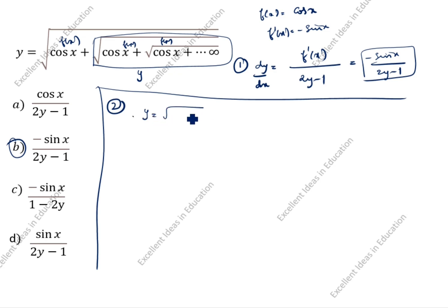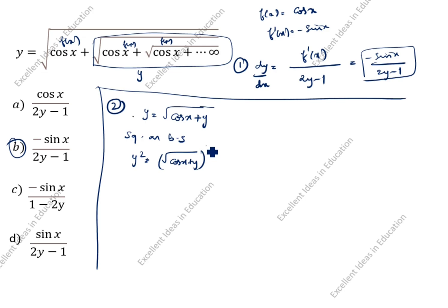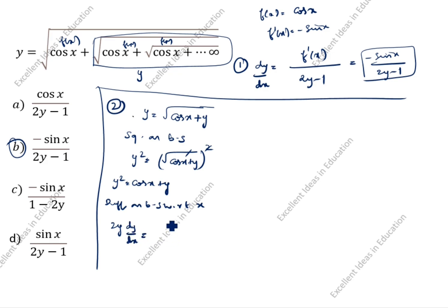Since the series is infinite, we can write y = √(cos x + y). Squaring both sides, y² = cos x + y. Differentiating both sides with respect to x: 2y·dy/dx = −sin x + dy/dx.